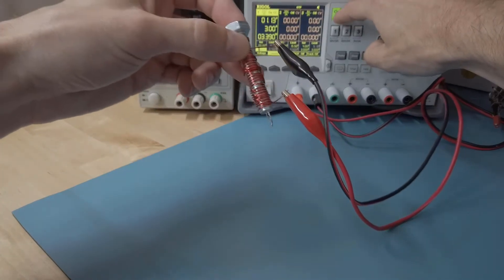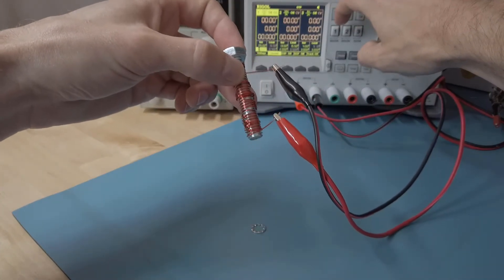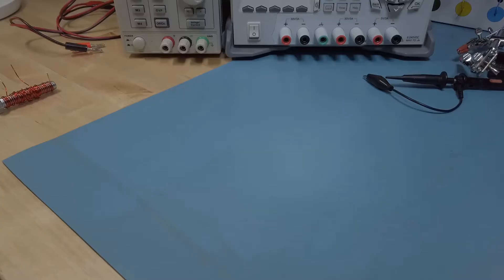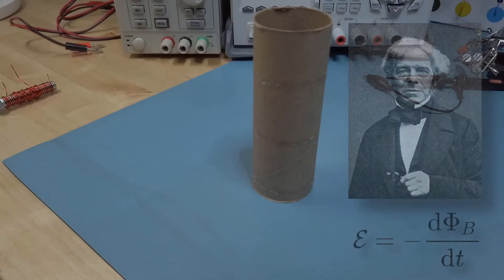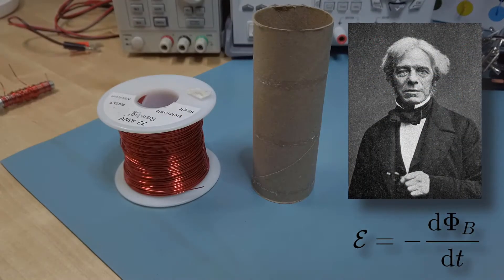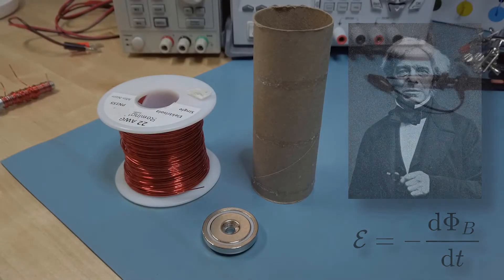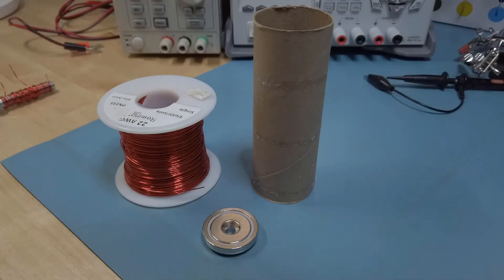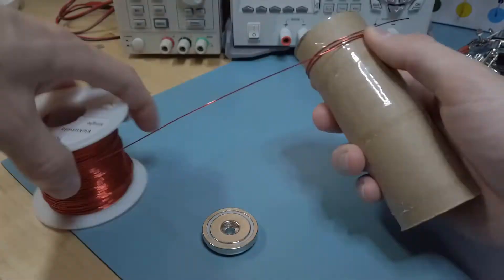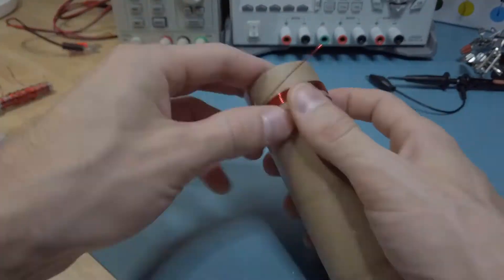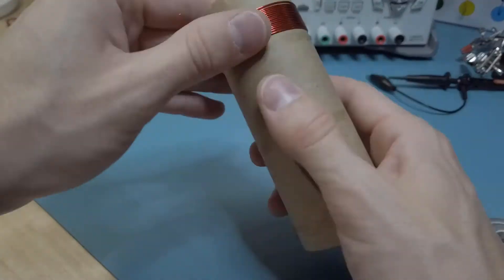So in theory by passing a current through this wire a magnetic field will be generated following the right-hand rule. The next concept to understand is what is known as Faraday's law. To demonstrate Faraday's law we will be creating a coil out of some more magnet wire and a toilet paper roll.